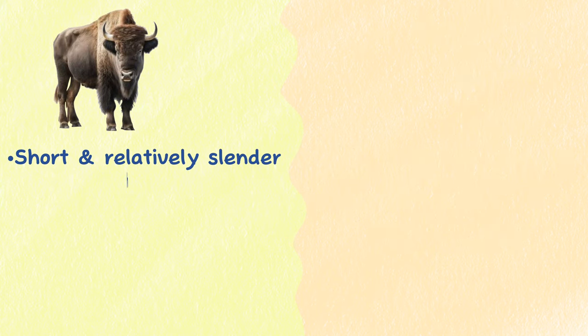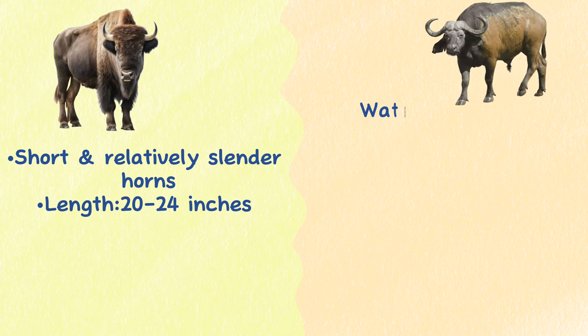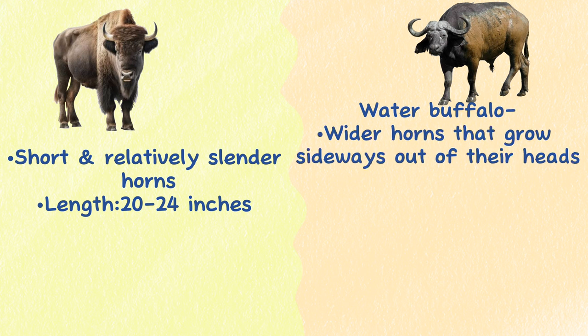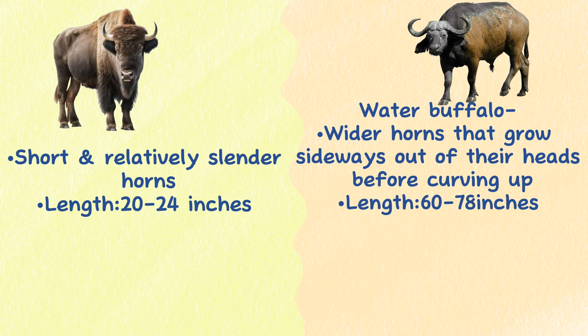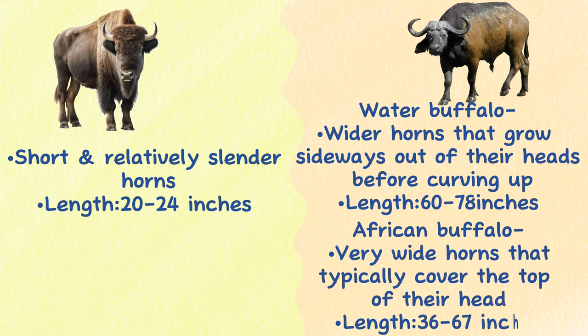Horns. Bison all have short, relatively slender horns that curve out of their heads, with a length of about 20 to 24 inches. Water buffalo have wider horns that grow sideways out of their heads before curving up, with spans that can reach between 60 to 78 inches. African buffalo have very wide horns that typically cover the top of their heads, with a length of between 36 to 67 inches.